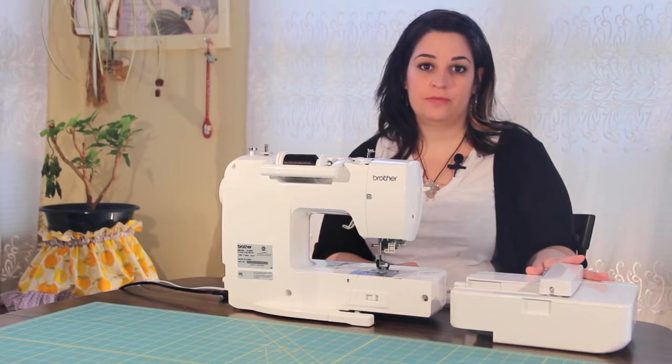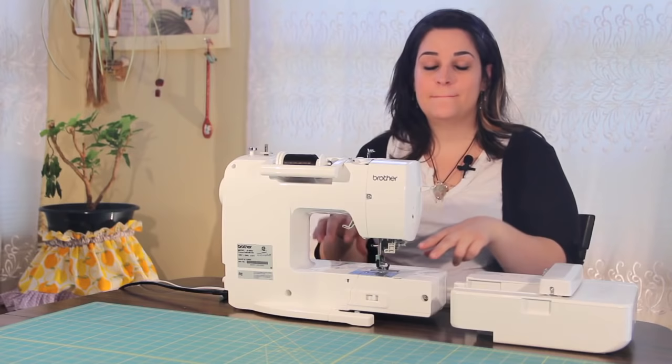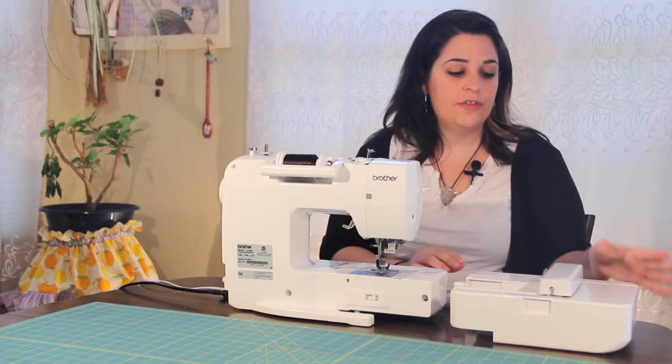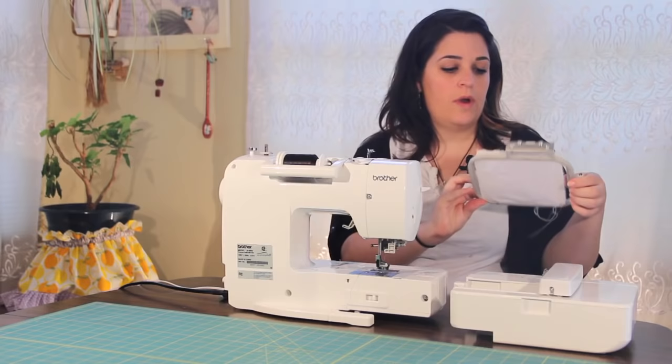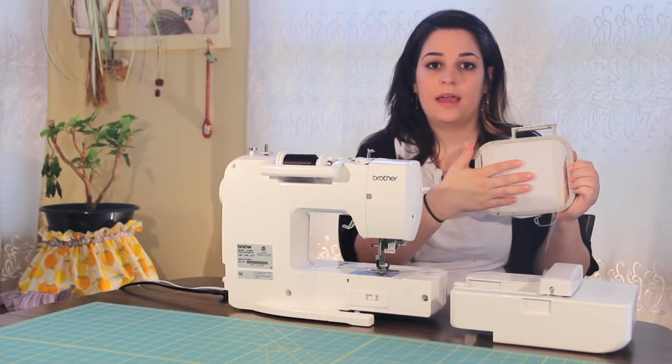What you're going to need to get started with your machine embroidery is a machine that has the capability for embroidery. Mine is a Brother sewing machine embroidery hybrid, so it does both. This is my embroidery attachment. You're also going to need your embroidery hoop with stabilizer on the back. I use a basting spray first and then just slap my stabilizer on the back of the fabric I'm embroidering.